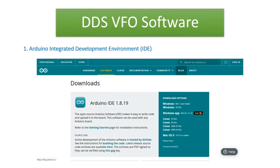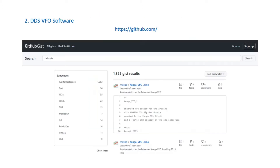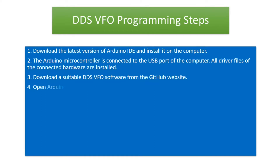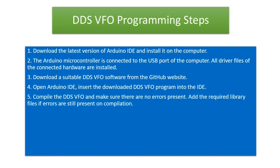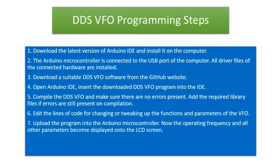B. The software part of the DDS VFO consists of the Arduino IDE and the DDS VFO software. The latest version of the Arduino IDE is installed on the computer. The Arduino Nano is connected to the USB port of the computer and all driver files are installed. Download a suitable DDS VFO software from the GitHub website. Open the Arduino IDE, insert the downloaded program, compile it and ensure there are no errors. Add the required library files if errors persist. Edit the lines of code for tweaking functions and parameters, then upload the program into the Arduino Nano. The operating frequency and all parameters are then displayed onto the LCD screen.